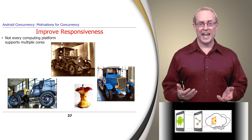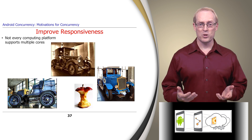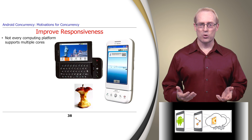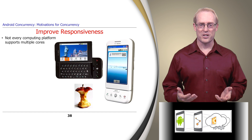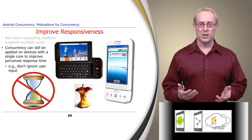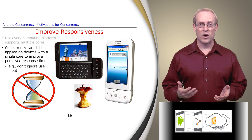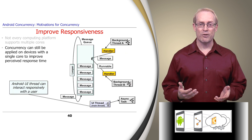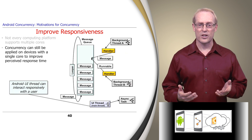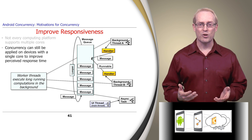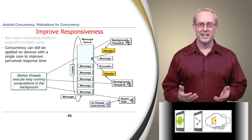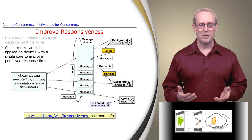Despite advances in hardware, not every computing platform in use today supports multiple cores. For example, you may have an older device with just one core, or there may be other constraints that make it hard to take full advantage of parallelism. Concurrency can still be useful, however, to improve perceived response time, such as ensuring the user interface doesn't ignore input from users while other operations are being processed. The Android user interface thread can interact responsively to user gestures and other input, while worker threads can execute long-running computations in the background and perform blocking operations on the file system and network. This link provides more information on responsiveness in computing systems.